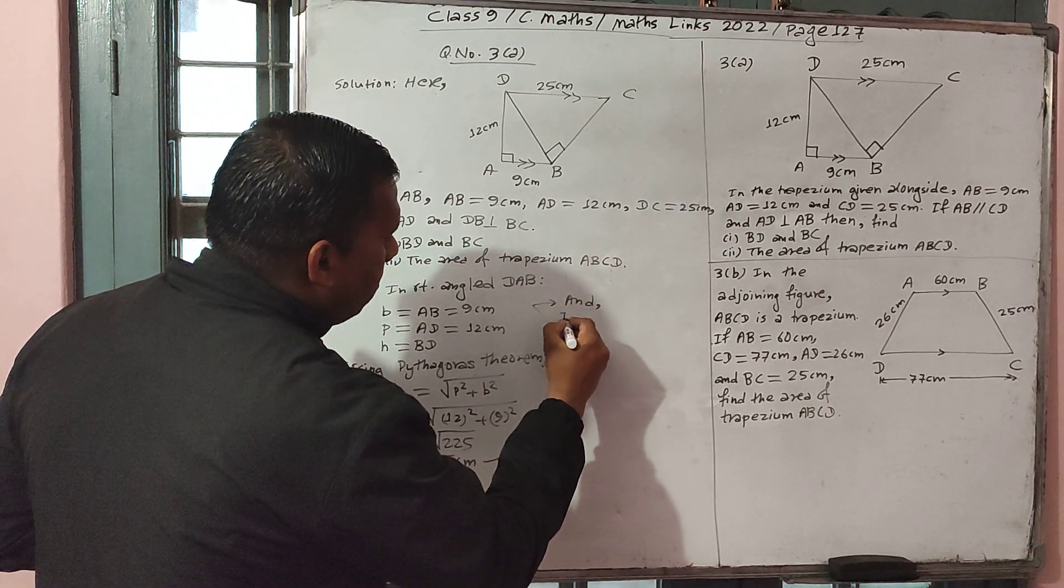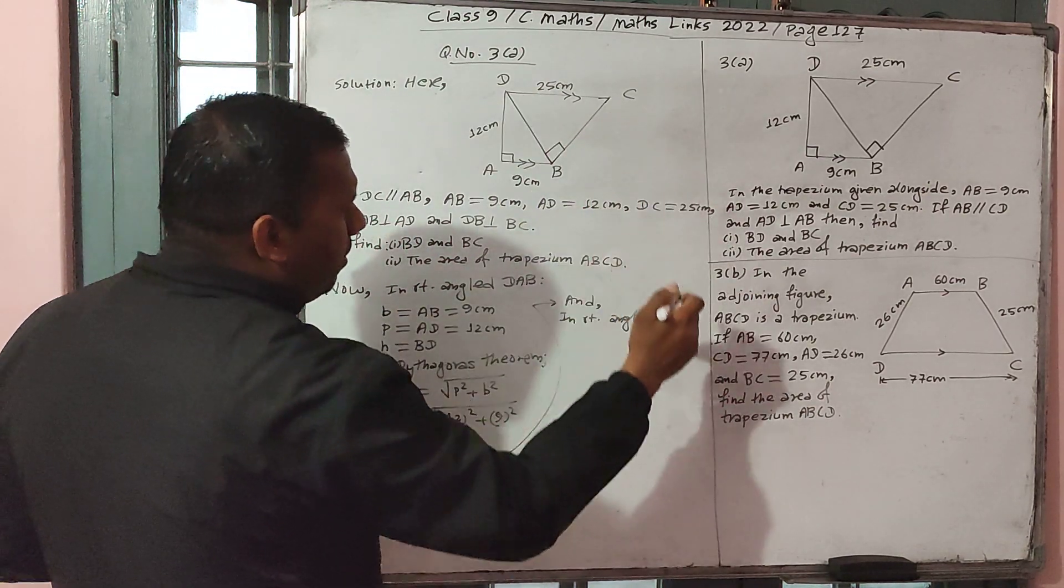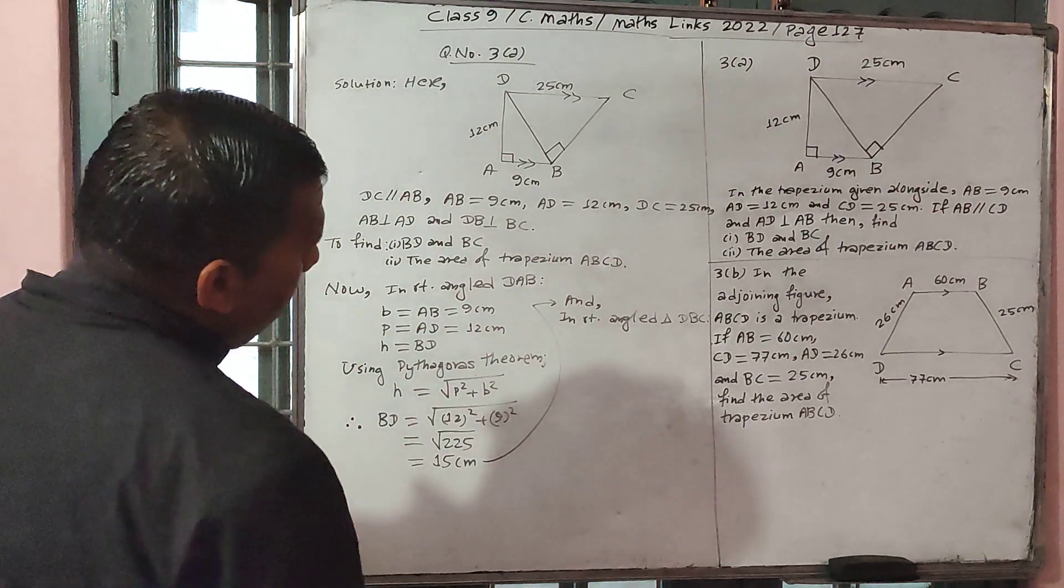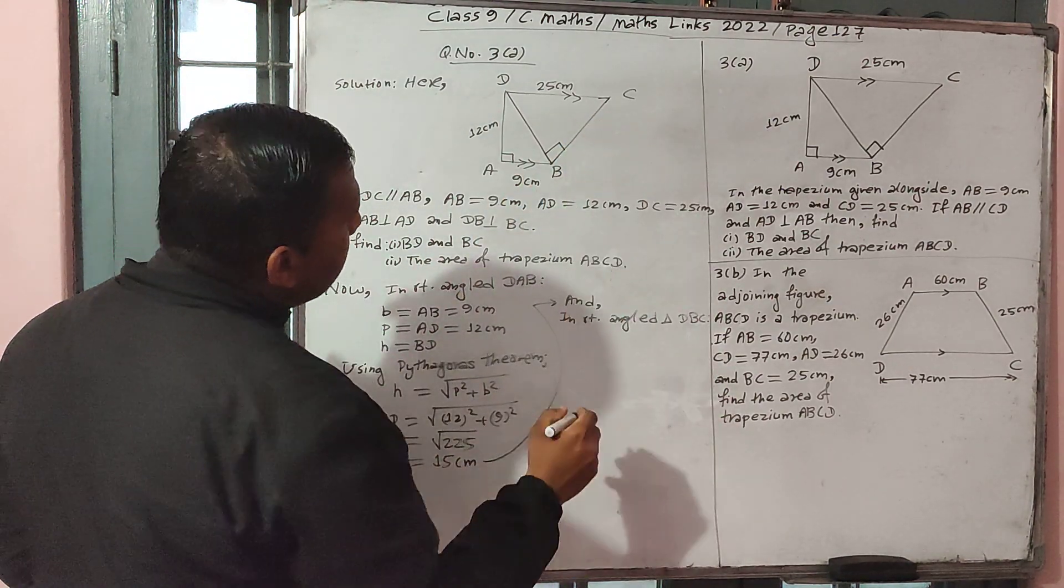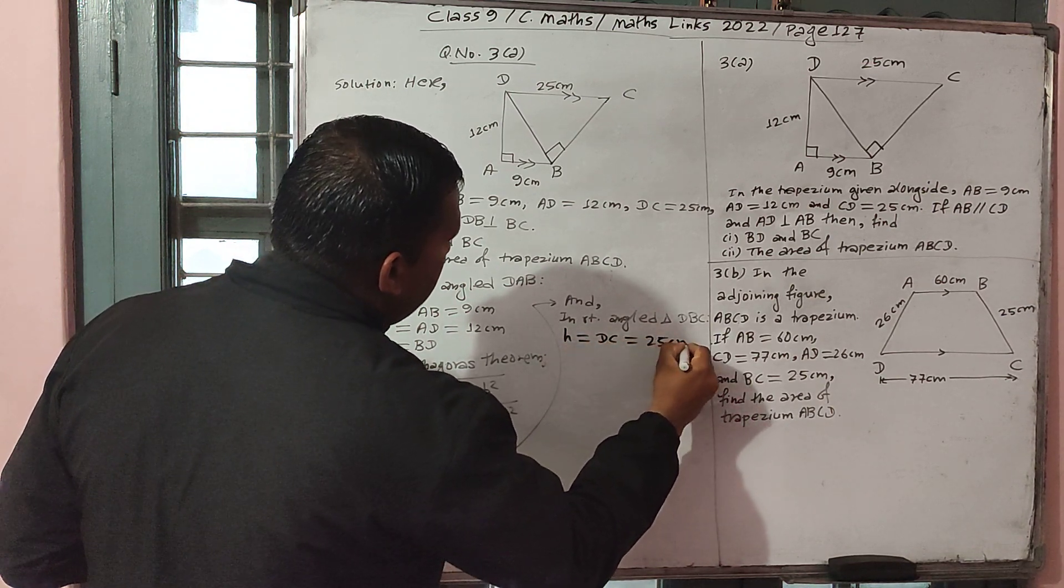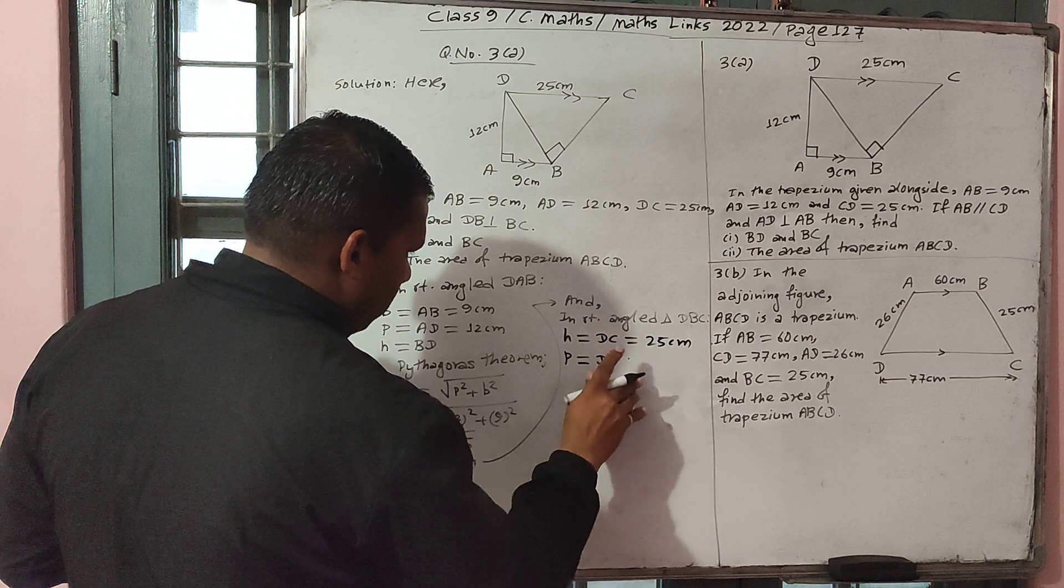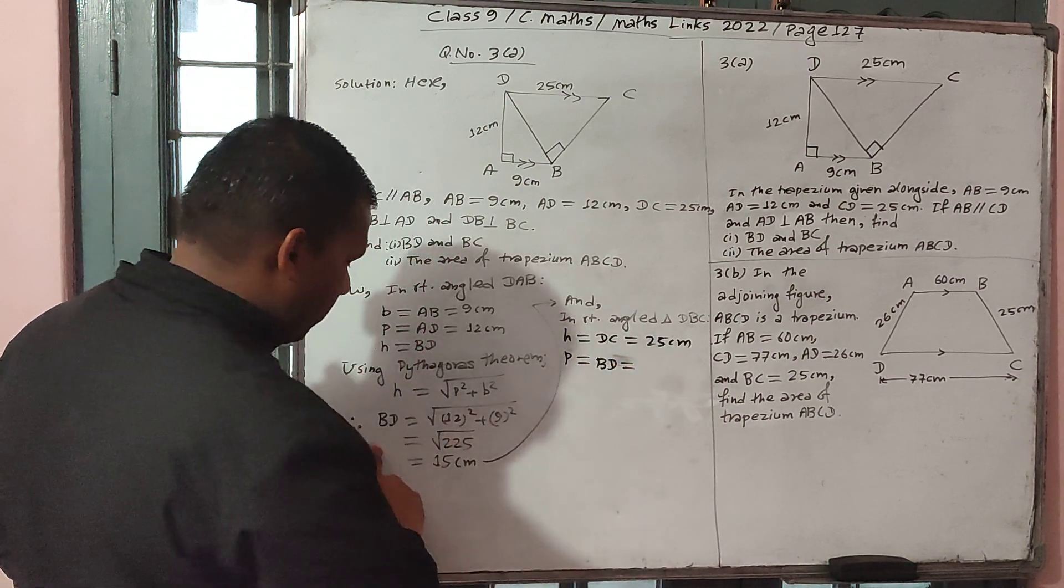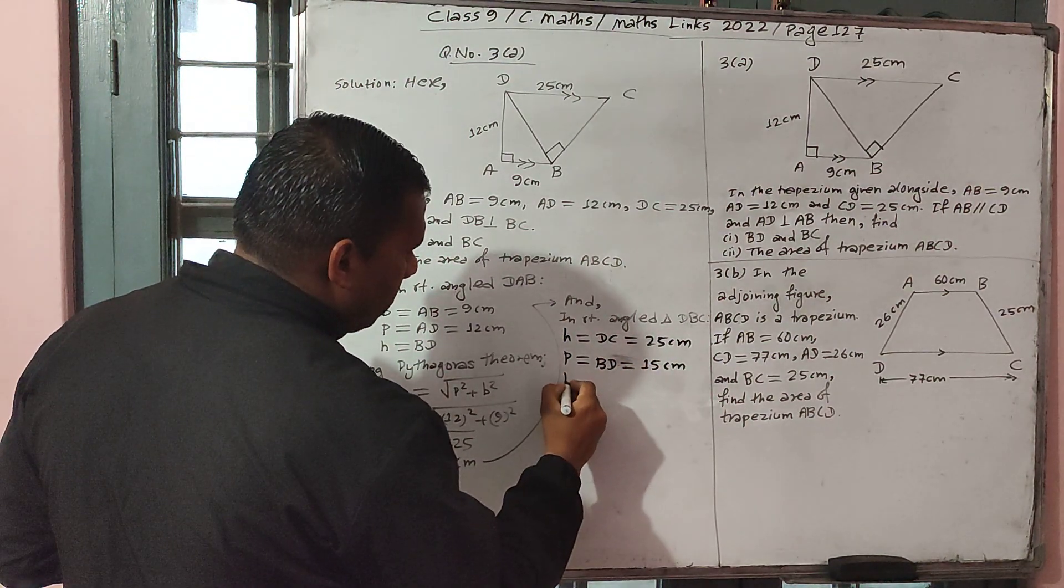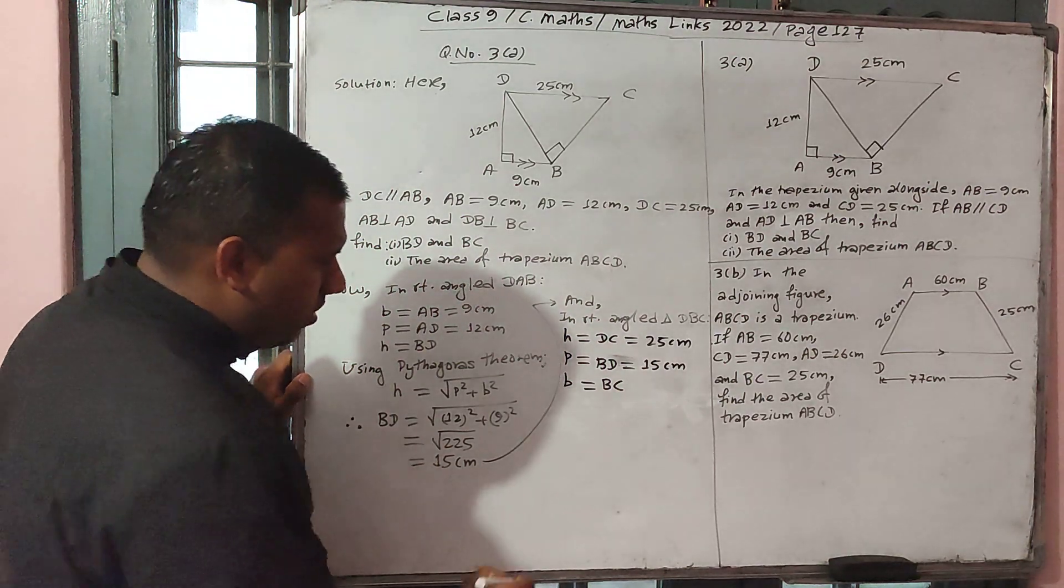And in right angle triangle DBC, hypotenuse equal to DC equal to 25 cm. Perpendicular equal to BD, BD is 15, 22 cm, base equal to BC.